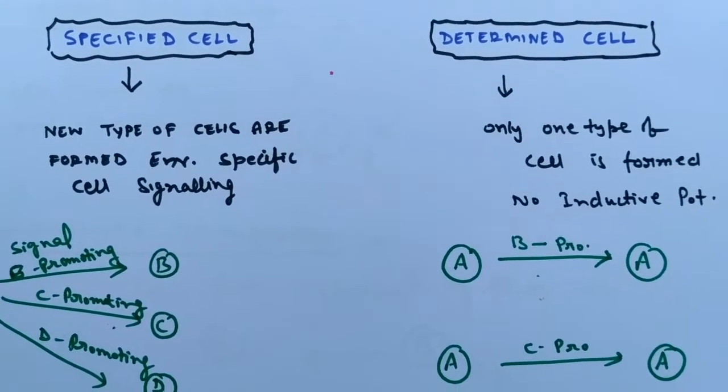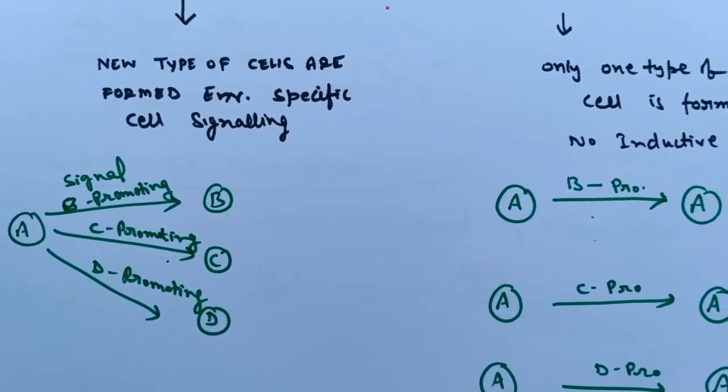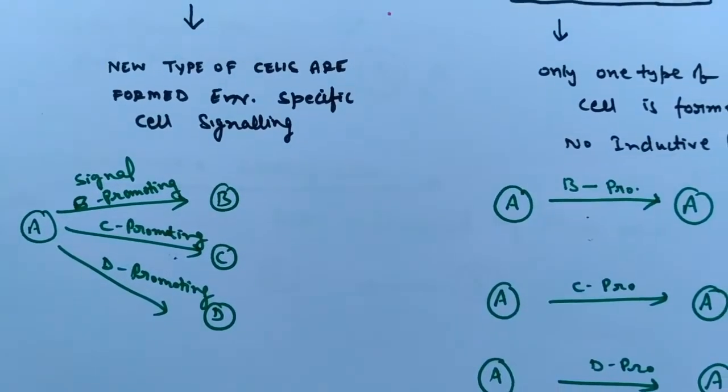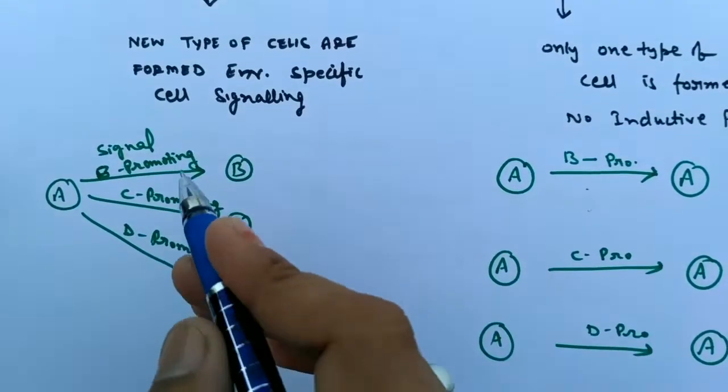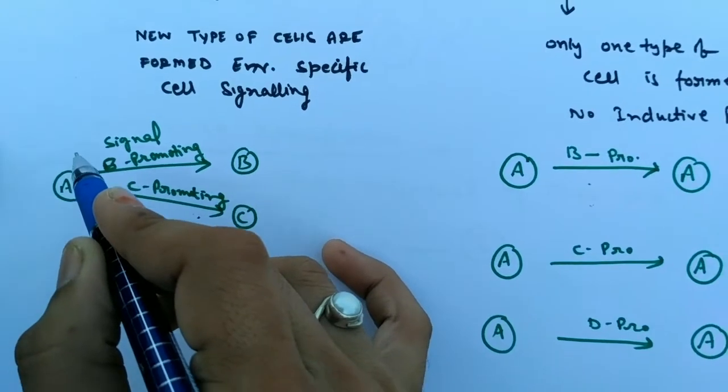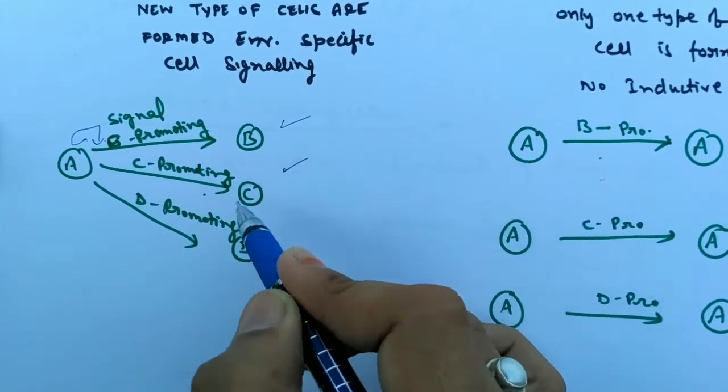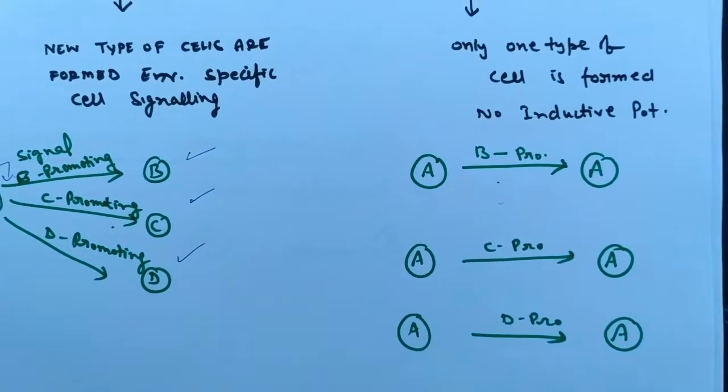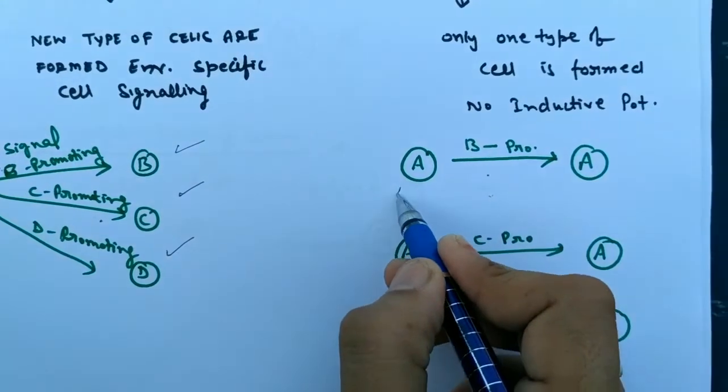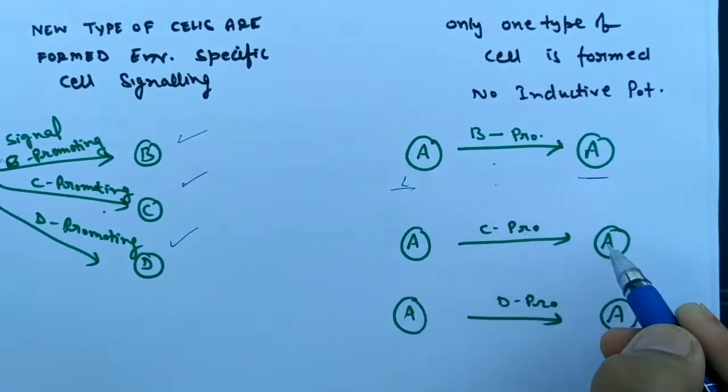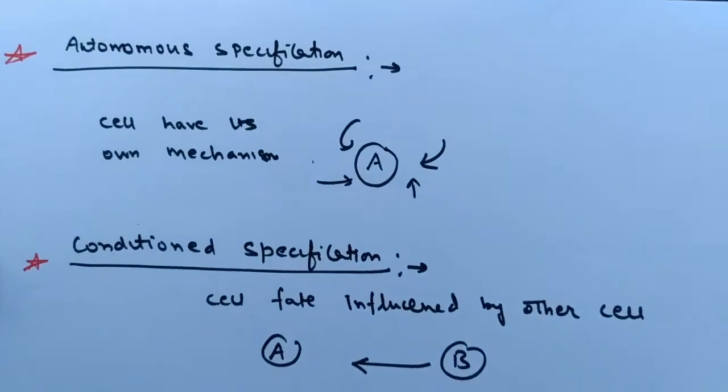Next is specified cells and determined cells. Specified cells are those cells which are affected by the environment. Depending upon the environment provided to these types of cells, they form different types of cell lines. In the diagram, if A cell is fed with B-promoting factors it will form B, if C-promoting it will form C, if D-promoting it will form D. But in determined cells, the environment gradient never affects. One type of destined cell will always form that particular cell, whatsoever the stimulus is being given.